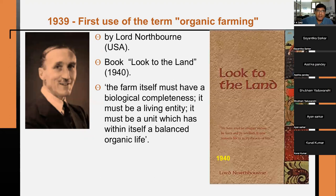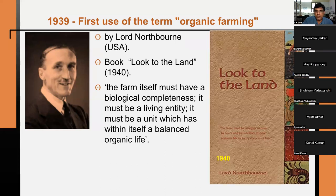In 1939, Lord Northbourne from the UK first used the term 'organic farming.' His book was 'Look to the Land.' His theory was that the farm itself must have biological completeness — everything has to be there on the farm, all inputs must come from it. It must be a living entity, a unit which has within itself a balanced organic life.